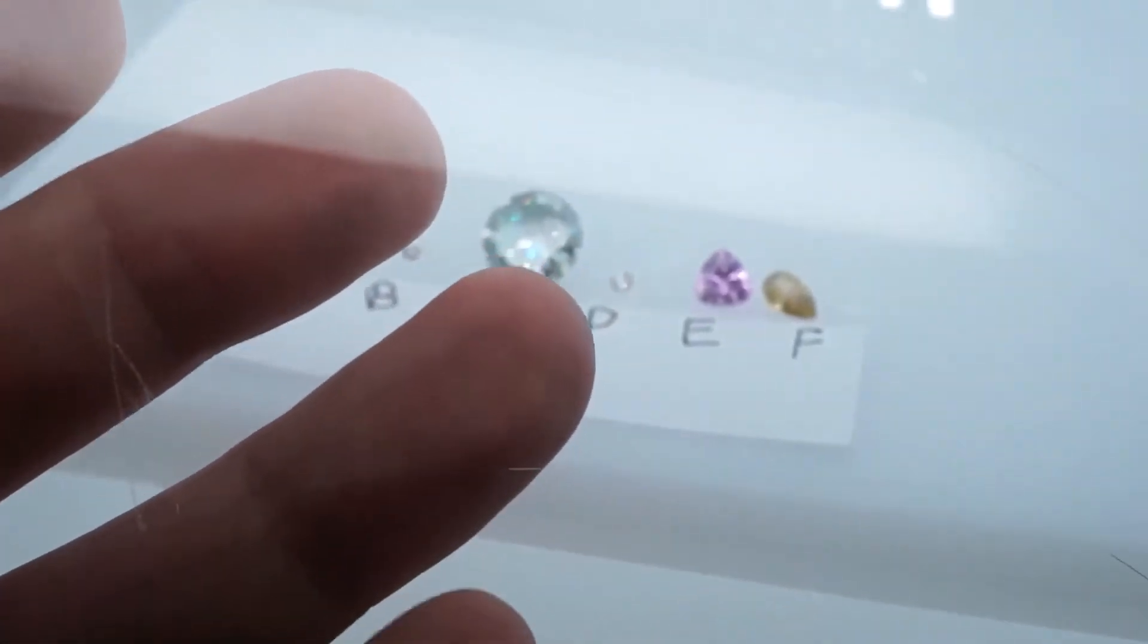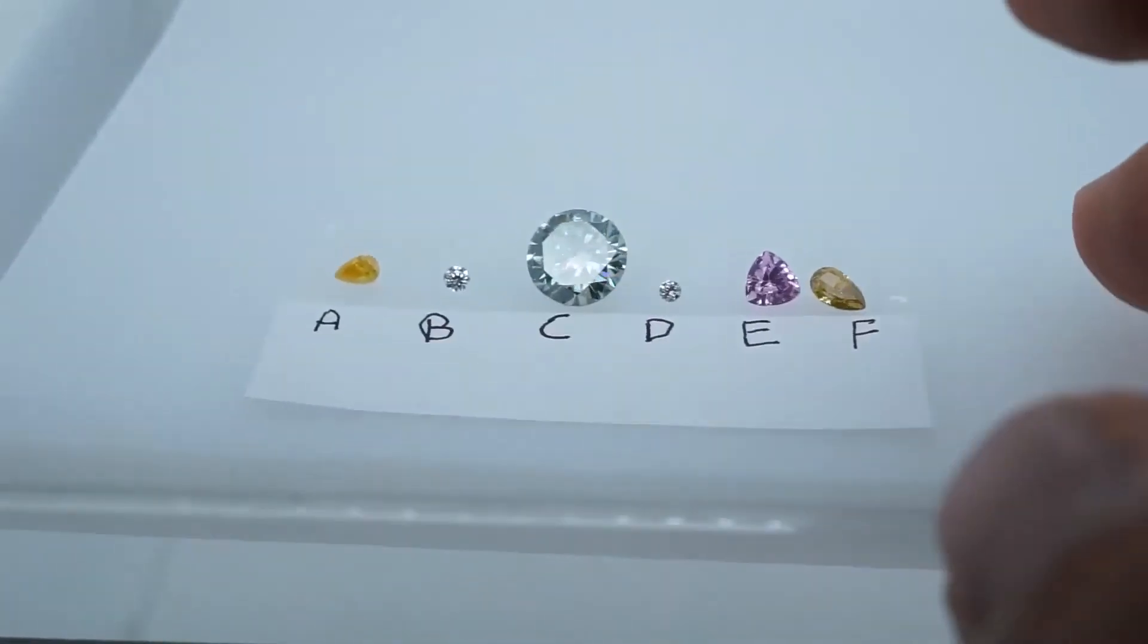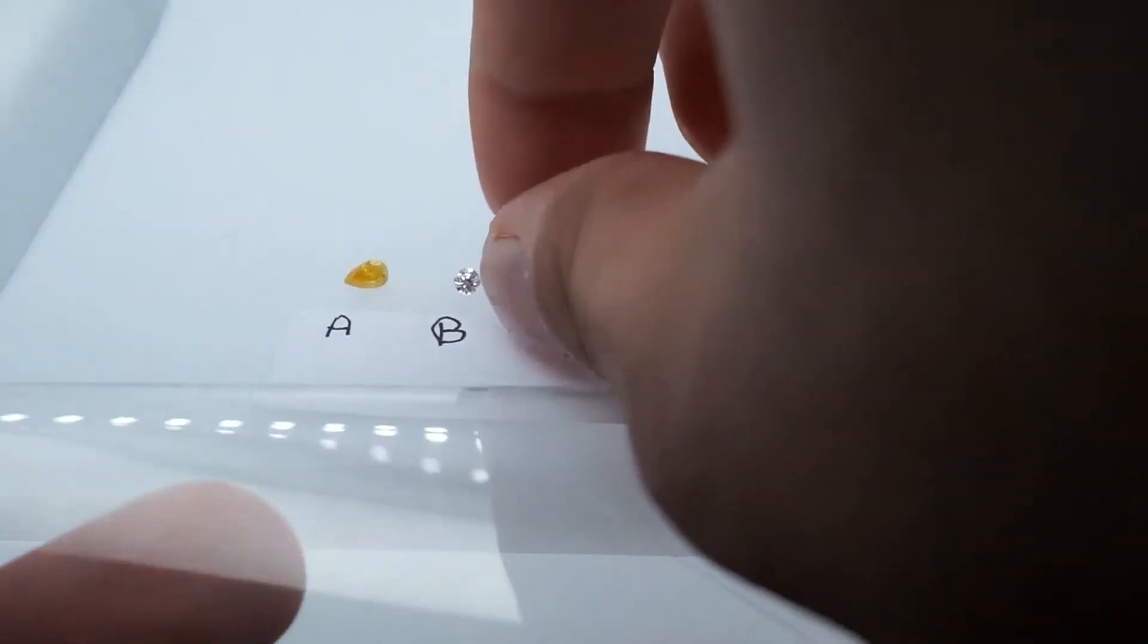So B, no scratches. A, left scratches. Based on the test alone, B would be a simulant and A would be either a lab grown or natural diamond. Testing out C. And I'll do another test where I test out moissanite and other very specific simulants and go into detail about that.